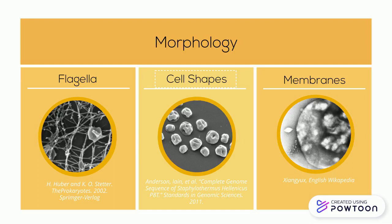Many Crenarchaeota have interesting membranes. The image shows Sulfolobus, which exhibits a unique membrane composition of ether-linked lipids and irregular lobed cells. These microbes flourish at a pH around 2 and are found in sulfur-rich environments such as the Yellowstone hot springs.